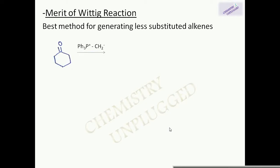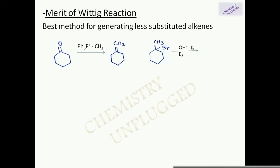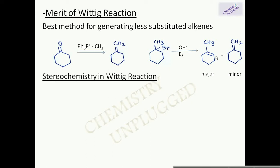The merits of the Wittig reaction: it is the best method for generation of less substituted alkenes. For example, we have cyclohexanone and we use a ylide containing CH2⁻, so this CH2 group connects and the oxygen is removed with Ph₃P, giving a less substituted alkene. With other methods for generating alkenes, the more substituted alkene is the major product, so if we want a less substituted alkene we use the Wittig reaction.